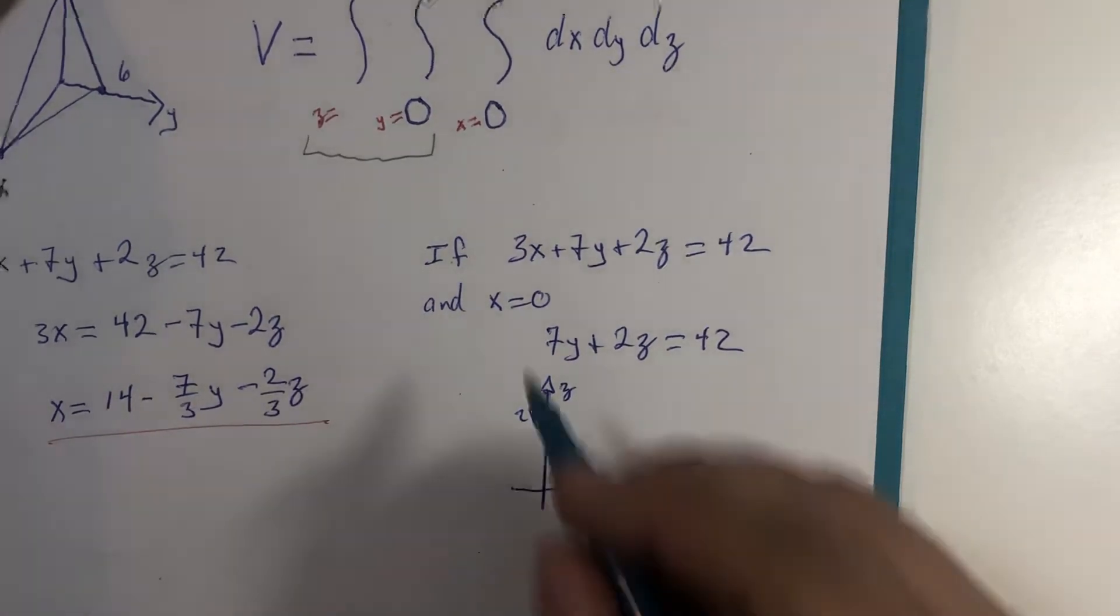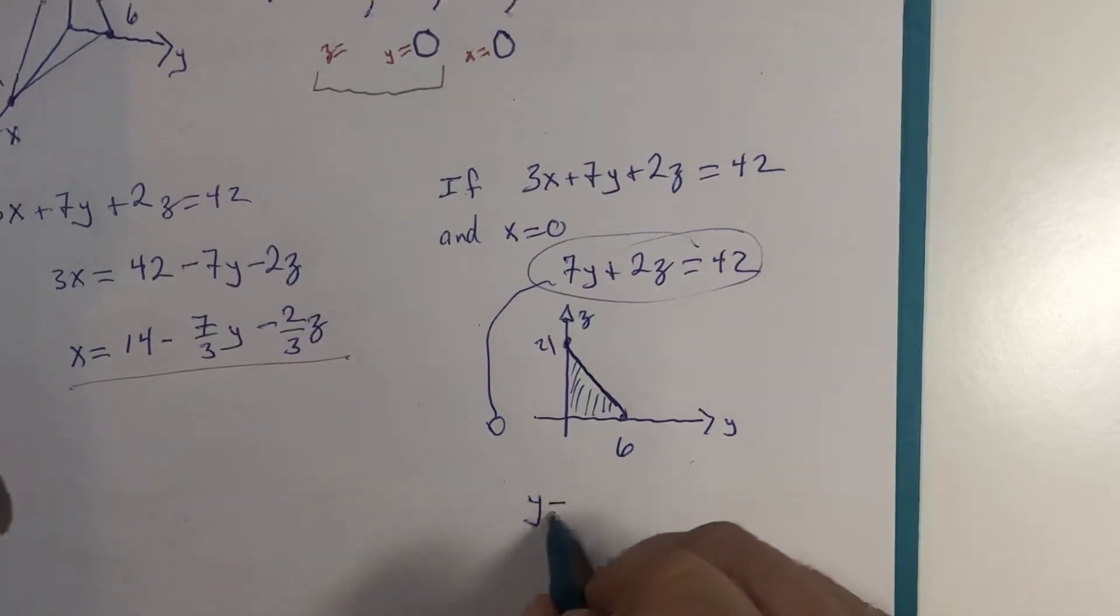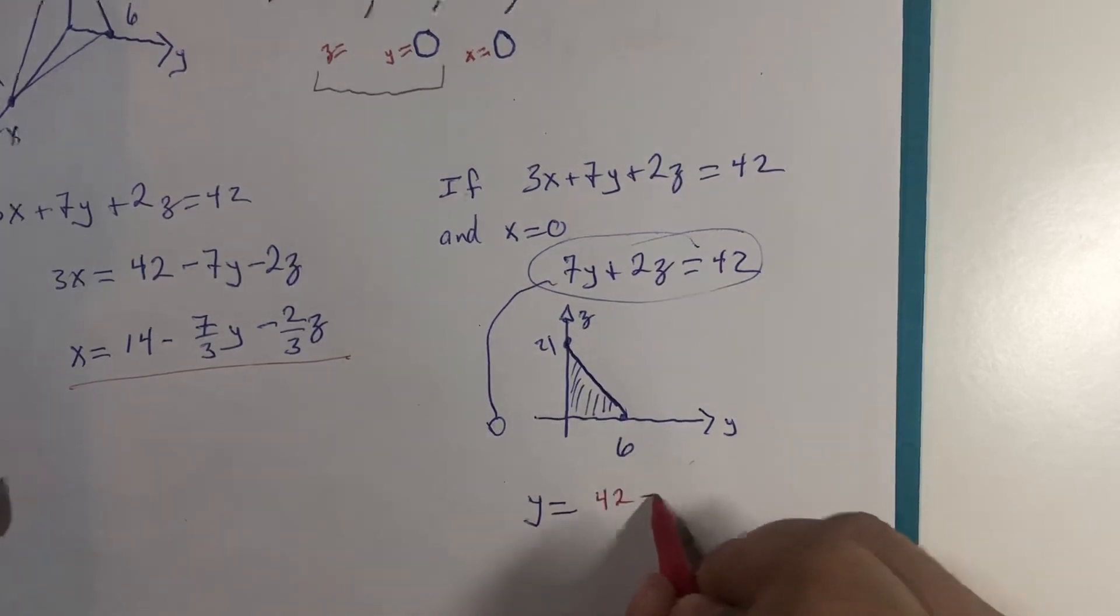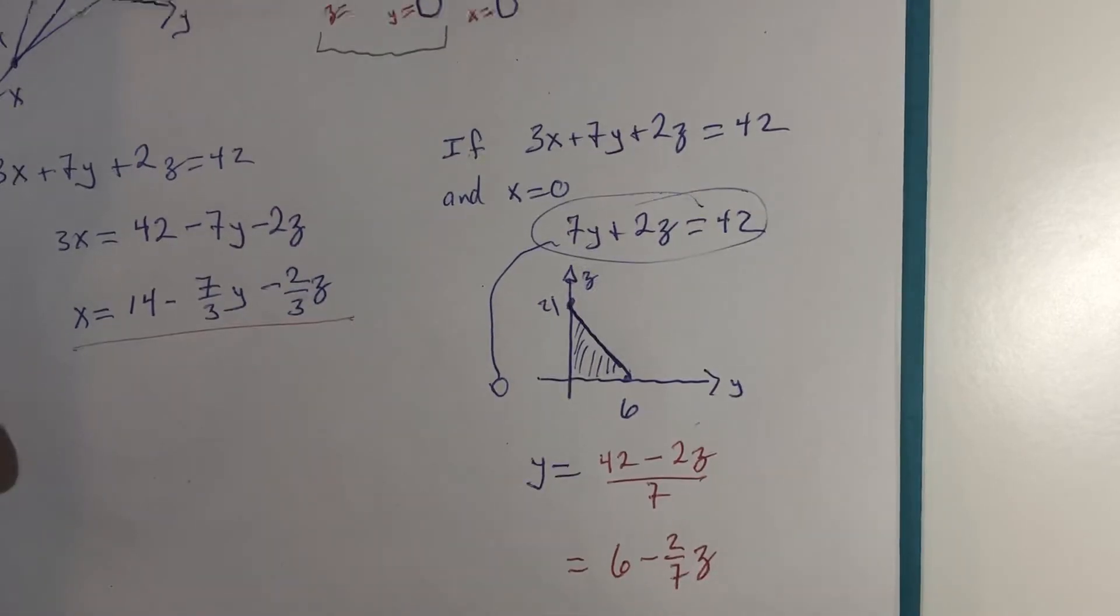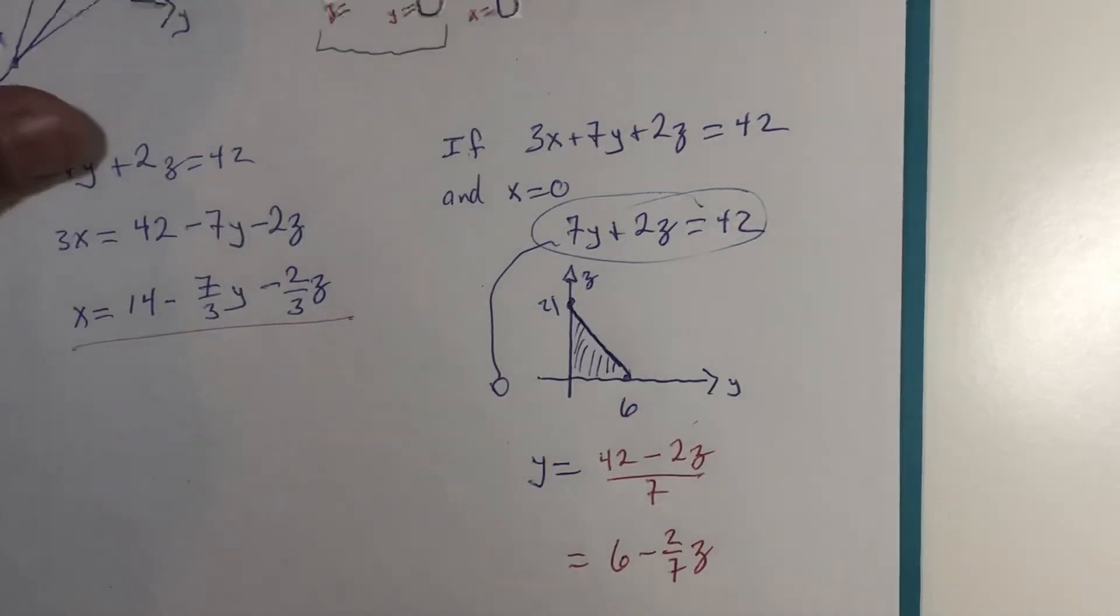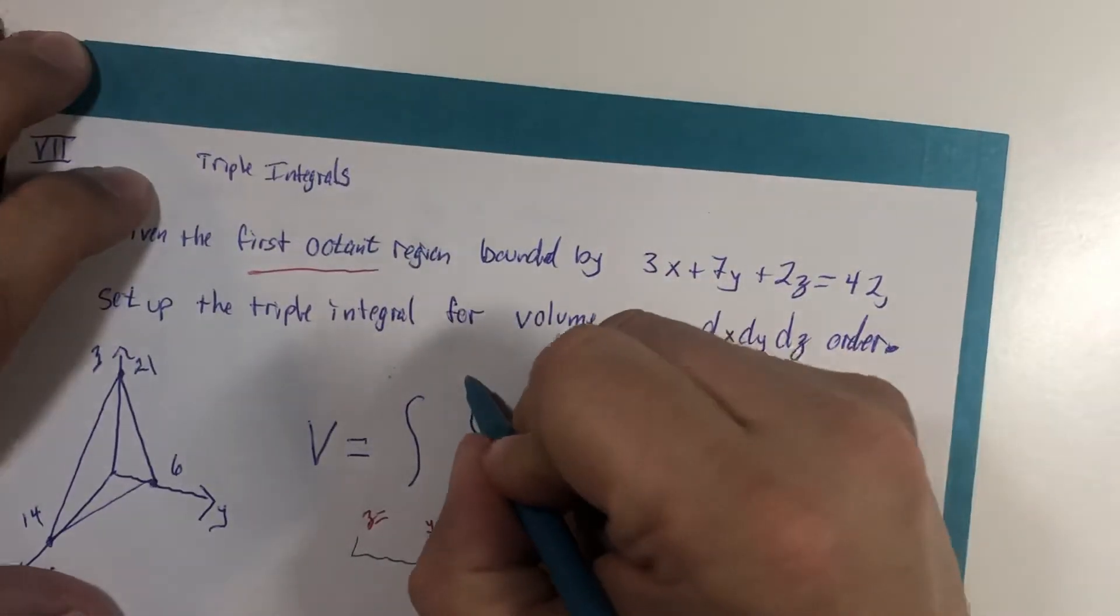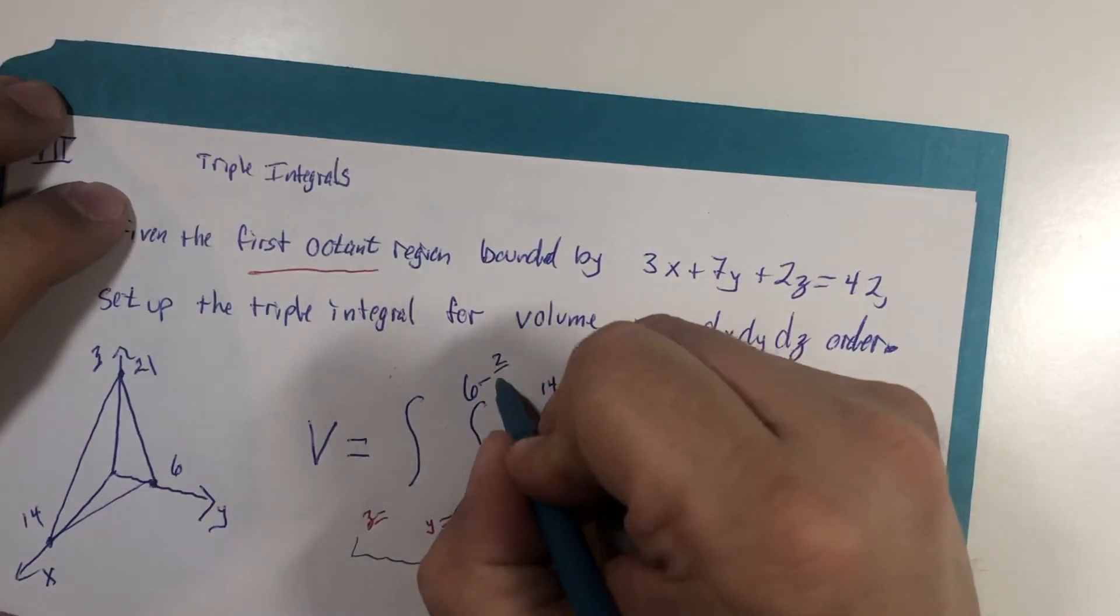So what we're going to do is we're going to take this and we're going to solve it for y equals and we're going to get 42 minus 2z divided by 7 or we'll call it 6 minus 2 sevenths z. That is my y equals upper limit of integration, 6 minus 2 sevenths z.